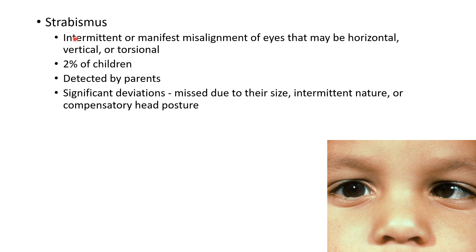Strabismus is intermittent or manifest misalignment of eyes that may be horizontal, vertical, or torsional. This picture shows a child with strabismus. If you notice, the Hirschberg test is abnormal. Strabismus is present in around 2% of children. It is usually detected by parents.